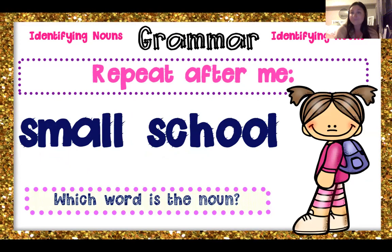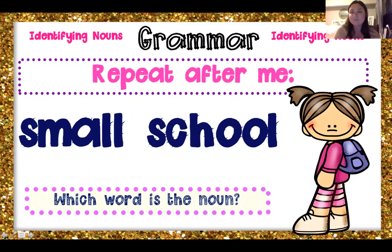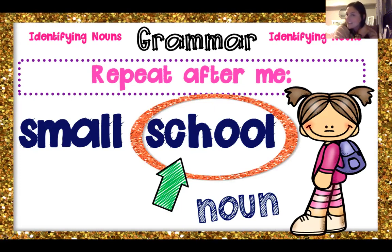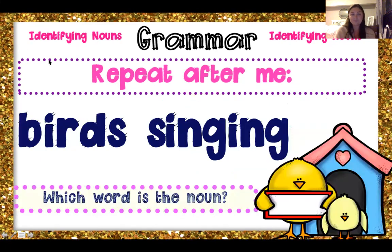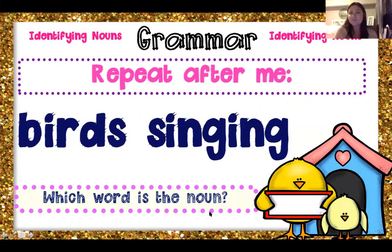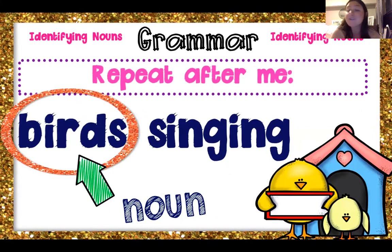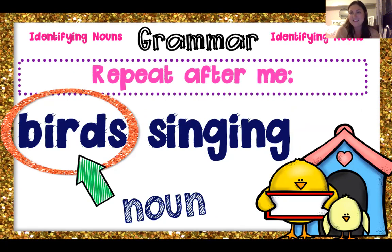Let's do it again. Repeat after me: small school. Which word is the noun? School — great job. School is a place. Let's do this again: birds, singing. Which word is the noun — birds or singing? Birds. If you said birds, that is the noun because that is a thing. Nouns can be a person, a place, or a thing. So these are all what we would call common nouns.